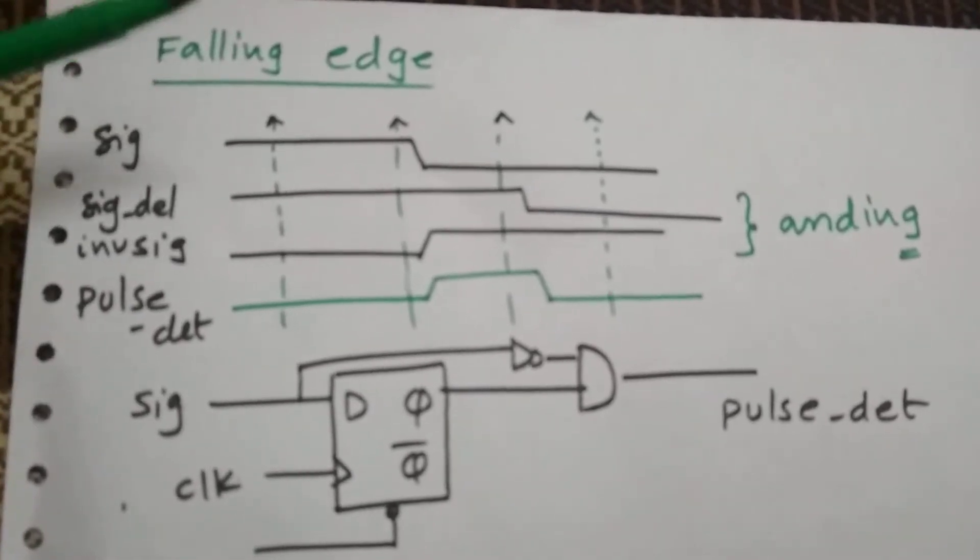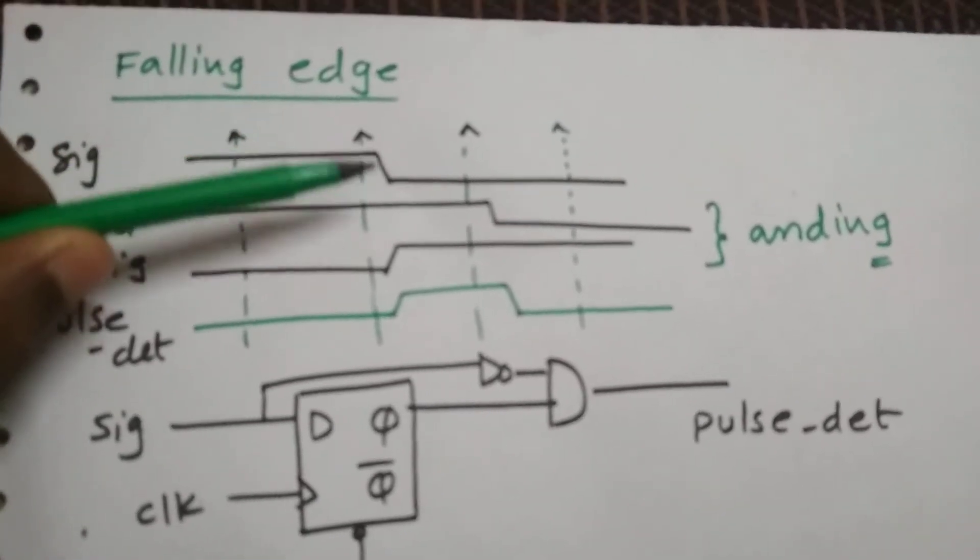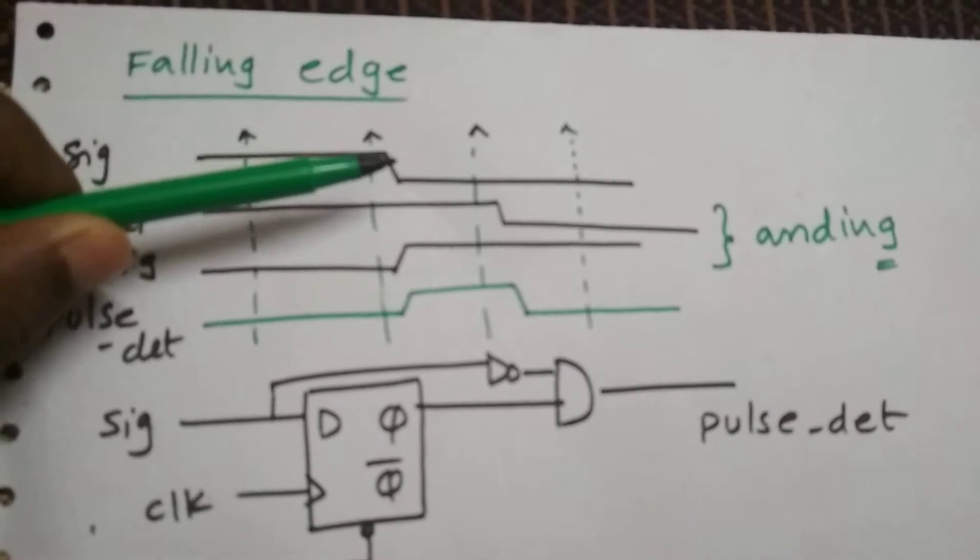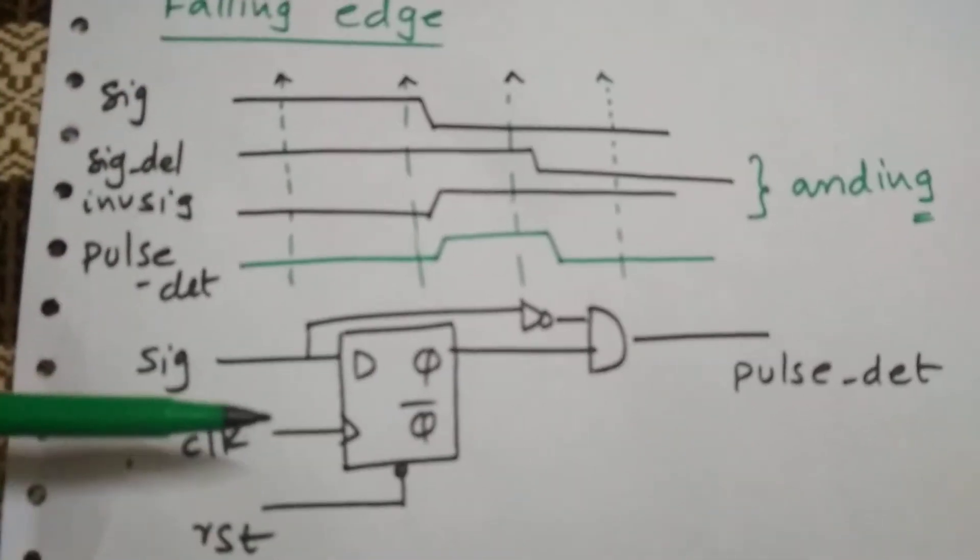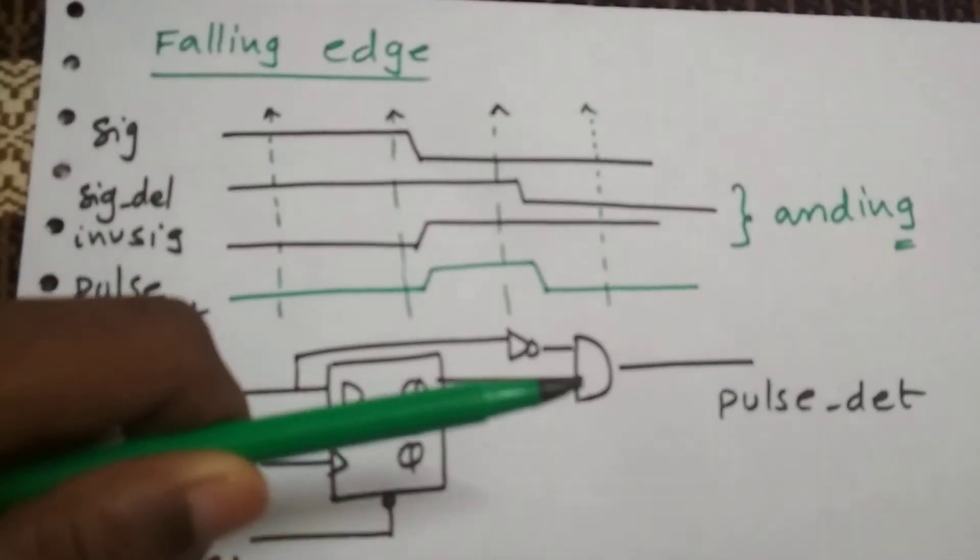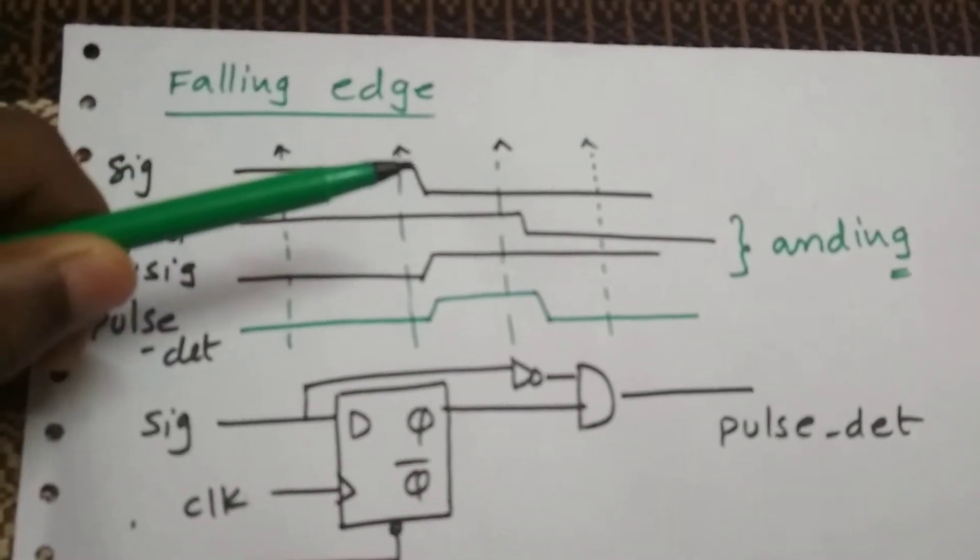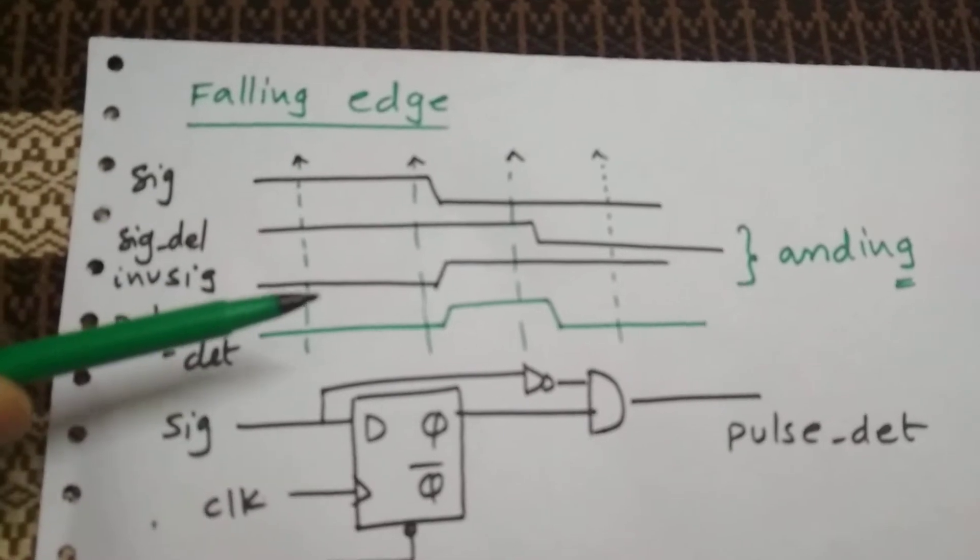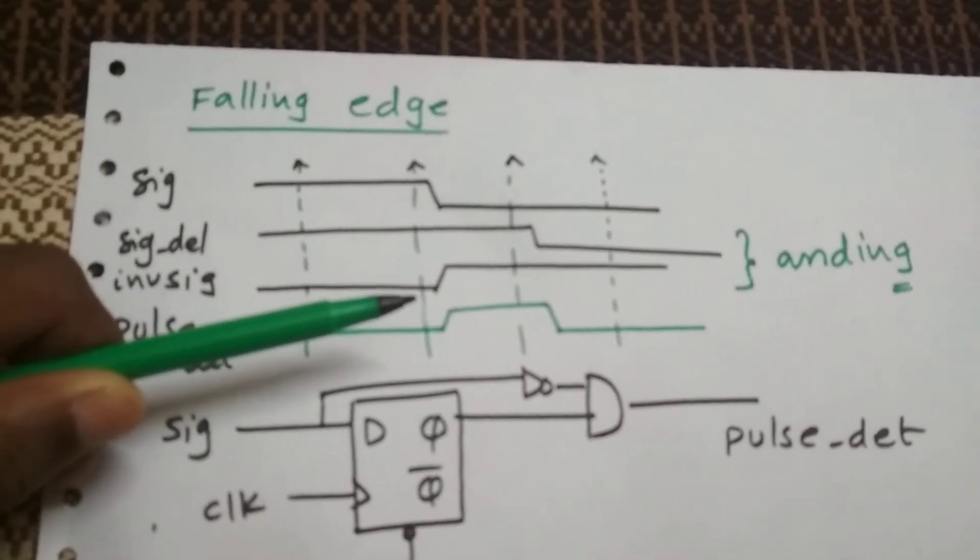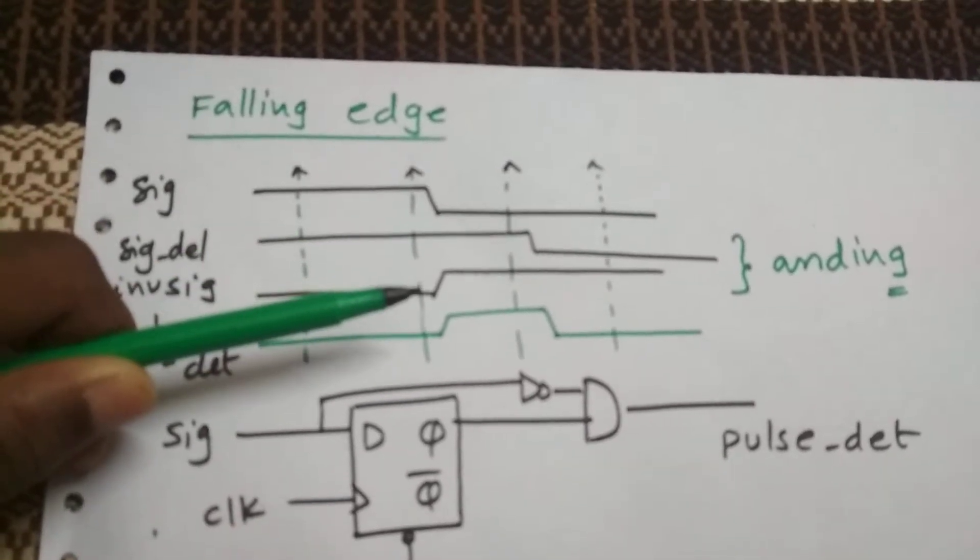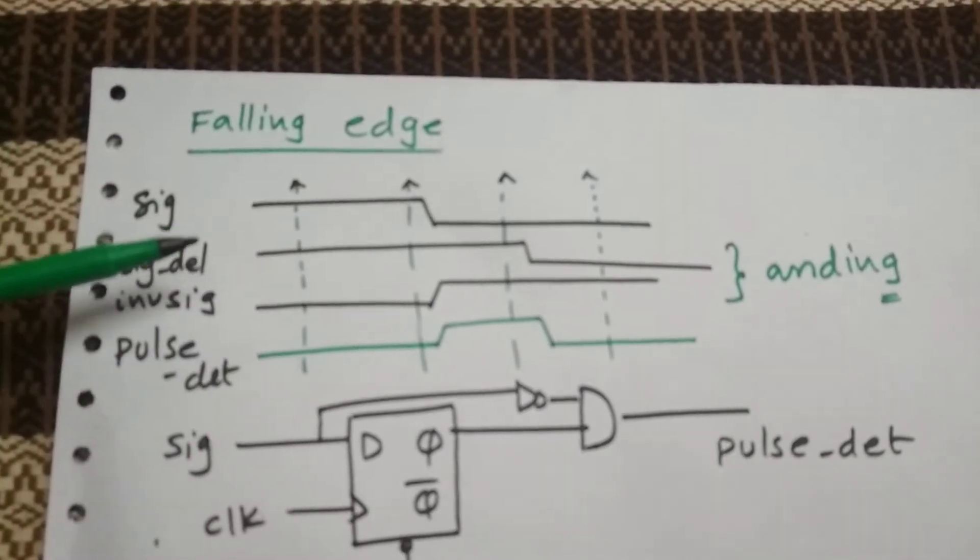Similarly we can detect the falling edge of the level. How are we going to detect it? First we are going to pass through a flop then we are going to AND with the complement of the original signal. We are complementing the original signal over here. This is the inverted signal of the original signal.